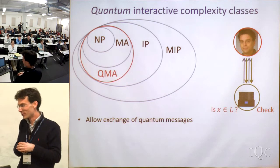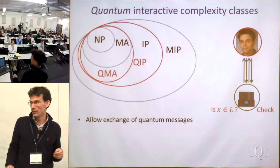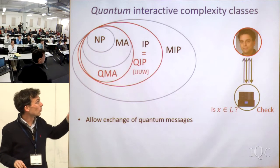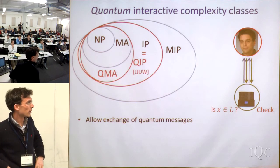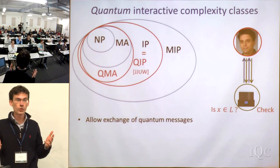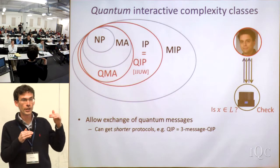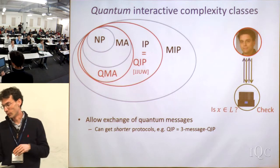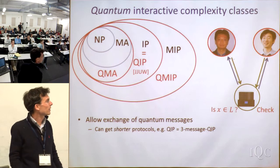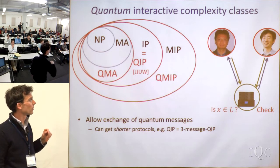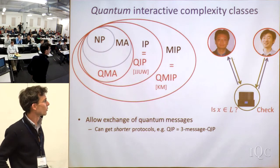John Watrous introduced the analog for IP, called QIP, where you're allowed to have interaction but now the messages are quantum. They're known to be equal: QIP equals IP, from a nice result by Jain, Zhang, Upadhyay, and Watrous. Allowing quantum communication doesn't change the expressive power. Similarly, Kobayashi and Matsumoto introduced QMIP — two provers, quantum, no communication, quantum messages — and showed MIP equals QMIP. So that's fairly well understood.